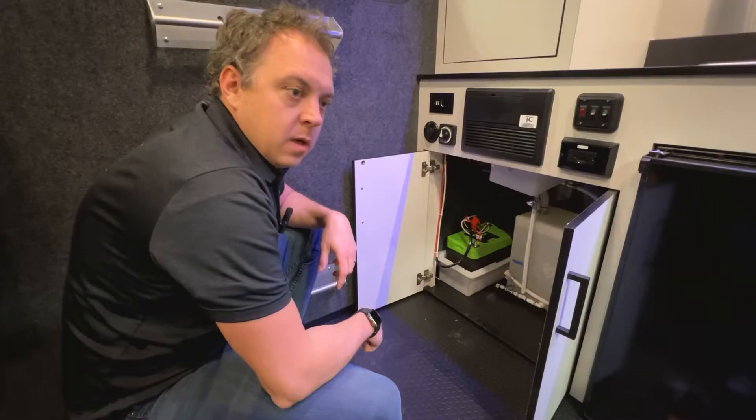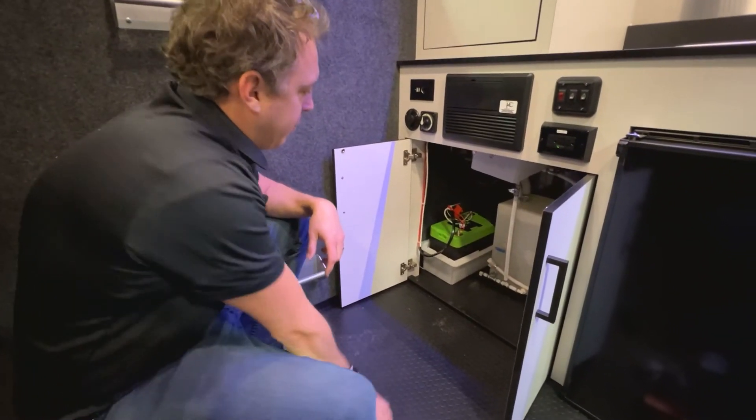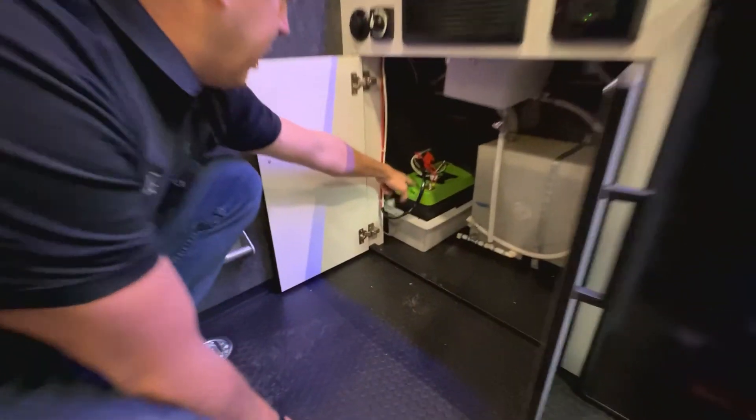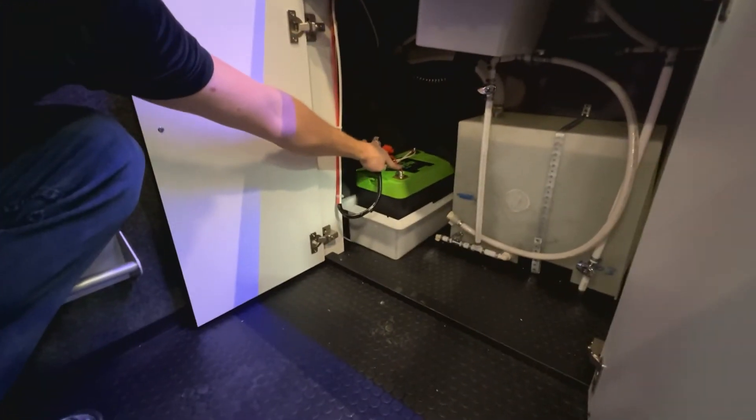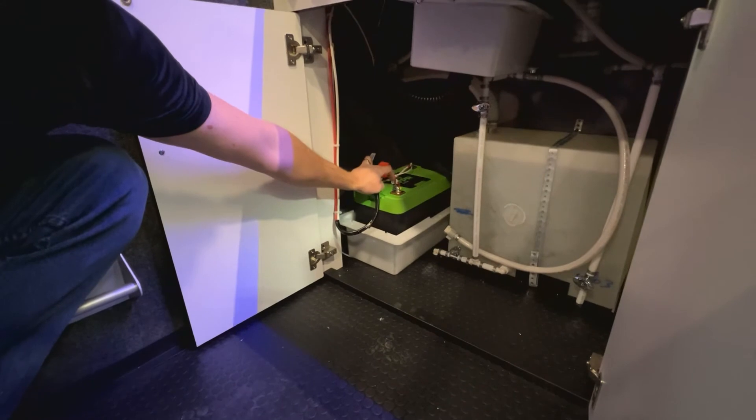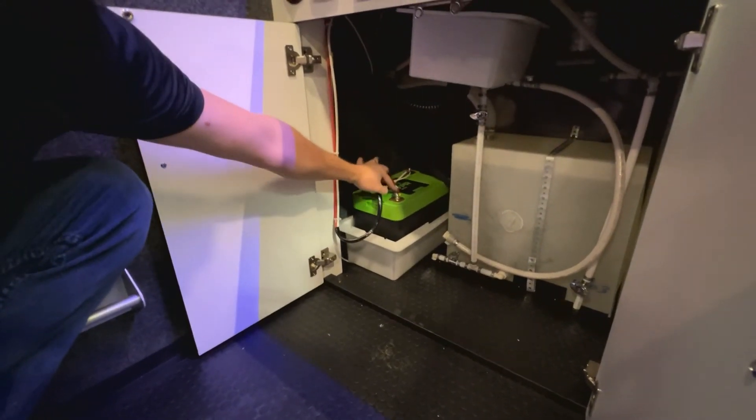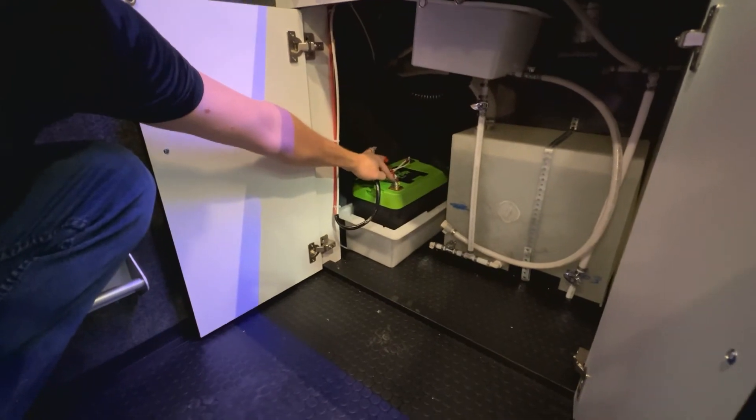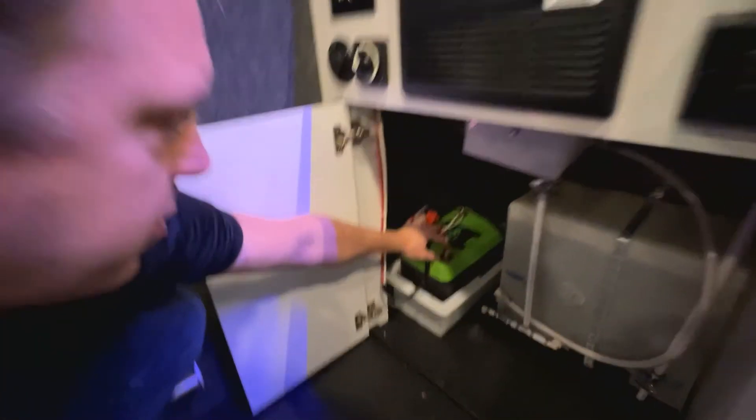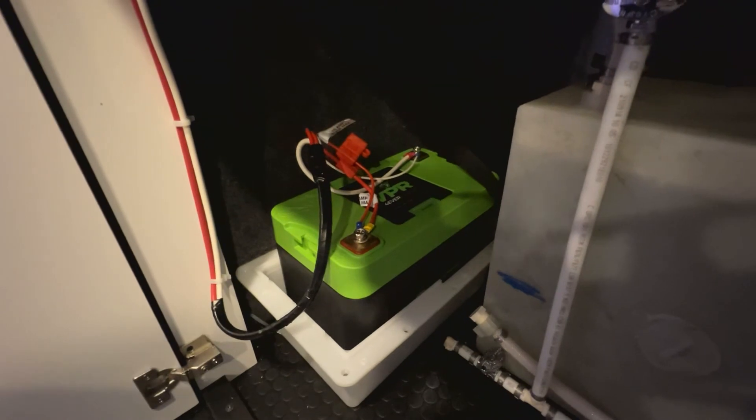Here we've got your Discover battery box with the battery installed. Make sure you connect all your red wires - you've got two red wires for your main power and also from the Zamp solar panel plug on the outside. Red goes on red, white goes on your negative, and that's how you set it up.